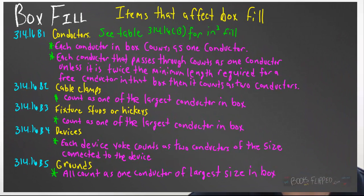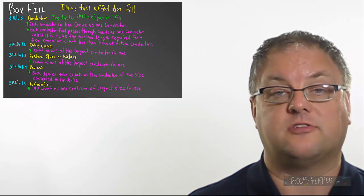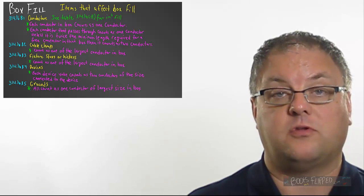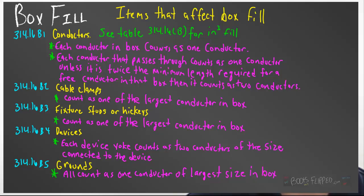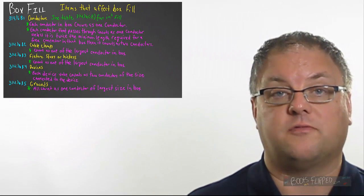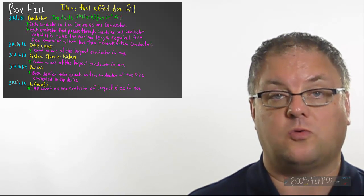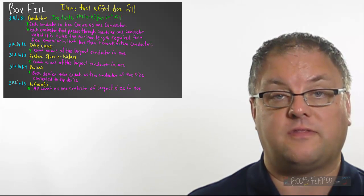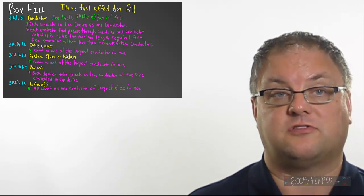In Article B2 of 314.16, it tells us that cable clamps inside of a box, they count as one of the largest conductor. So, all of the cable clamps together only count as one conductor. Remember that when you're doing your box fill calculations. In 314.16B3, we see that fixture studs and hickeys, not the kind on your neck, but those are fixture supports that go inside of a box, those also count as only one conductor. So, don't forget that when you're doing a calculation that you have a support for a box that has a light fixture in it.